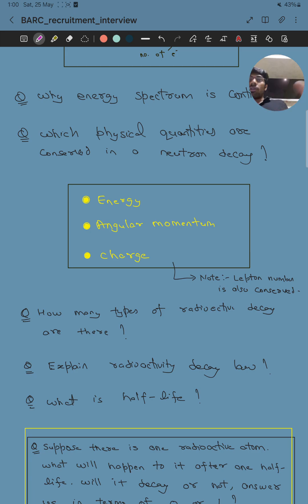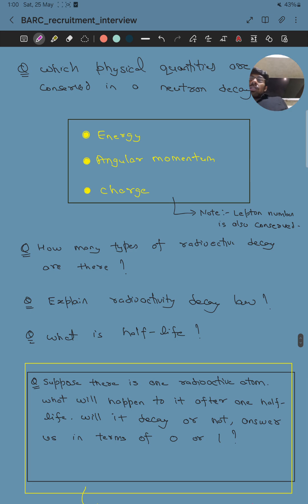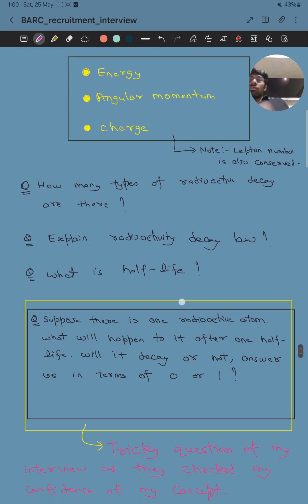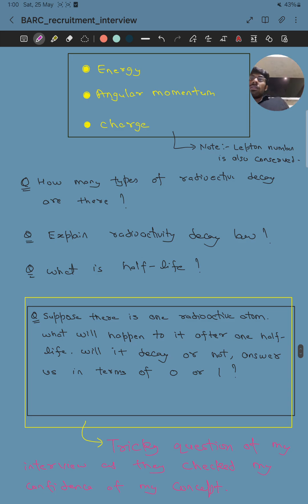Then he asked how many types of radioactive decay are there? You know three types of radioactive decay exist. Explain radioactive decay law. What is half-life?